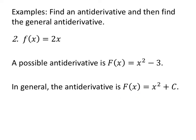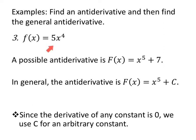For 5x to the fourth: x to the fifth plus 7 has derivative 5x to the fourth, but in general it's x to the fifth plus any constant. We use a capital C for an arbitrary constant. If you're using WebAssign, as we do at UTEP, make sure it's a capital C and that you don't forget to type it in — sometimes there's a C outside the box, sometimes there's not. When finding anti-derivatives it must be a capital C; WebAssign is case sensitive.